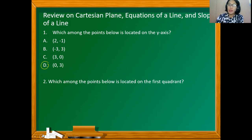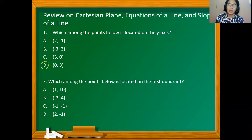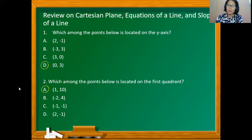Which among the points below is located on the first quadrant? Is it (1,10), (-2,4), (-1,-1), or (2,-1)? The points on the first quadrant have both positive x-coordinate and y-coordinate. So among the choices, option A has both positive x- and y-coordinates.